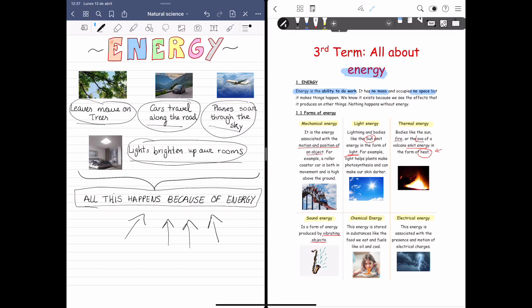Chemical energy. It's the one that is stored in substances. For example, food or fuels. Imagine you're going to play football. If you want to play football, you need some energy and this energy is stored inside your body when you eat food.